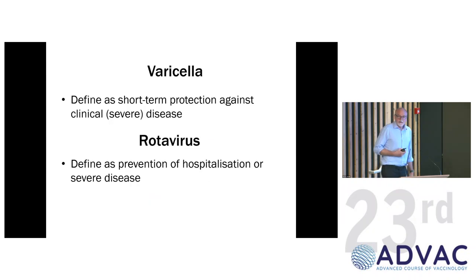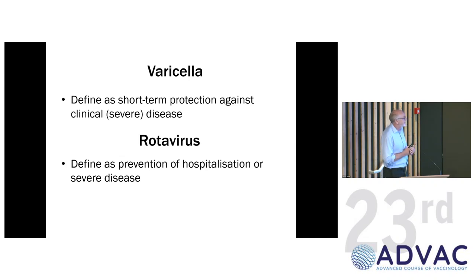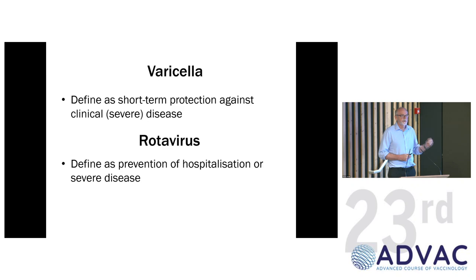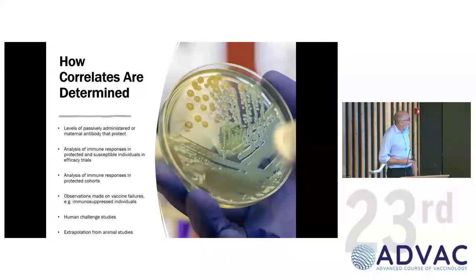What about some other diseases? For varicella, we define protection as clinical disease. For rotavirus, it's prevention of hospitalization. So it's really critical to understand what it is that you're trying to prevent when working out what your correlates will be.